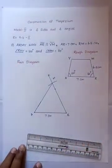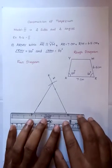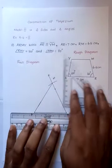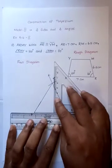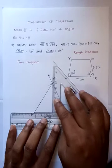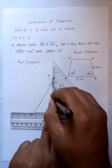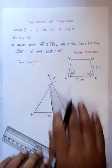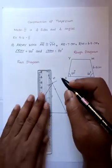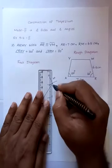Now we have to draw the height of the trapezium. One triangle part is complete. I will find the height. We remove the construction lines. Draw the perpendicular line from AR.